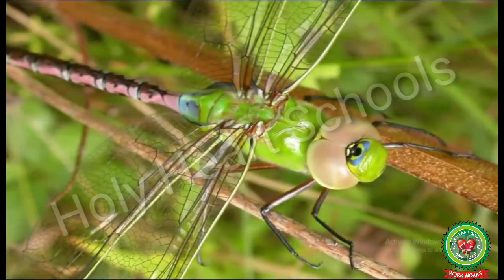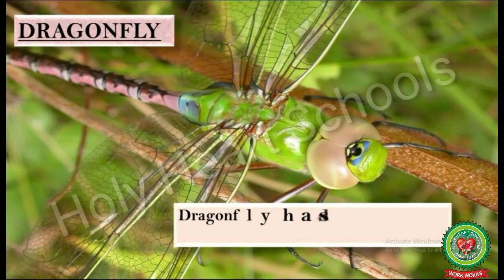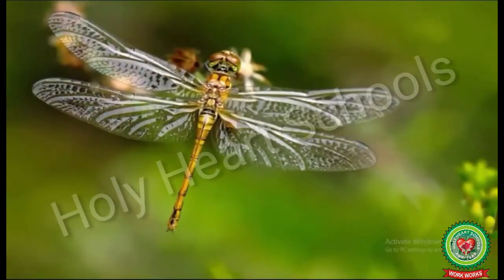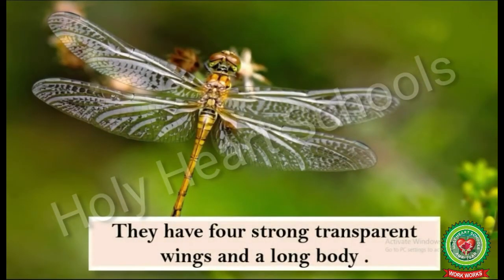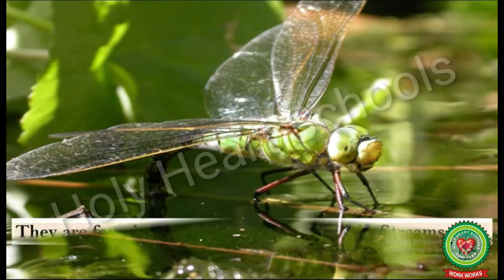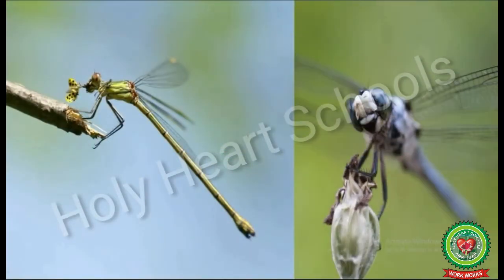Number two is dragonfly. Dragonfly has large eyes, which is its main sense organ. They have four strong transparent wings and a long body. These are found usually around lakes, ponds, streams, etc. They eat other small insects.